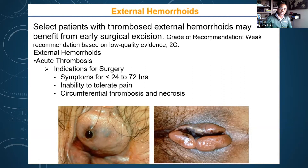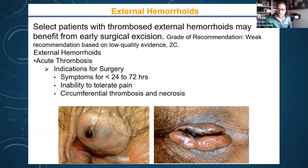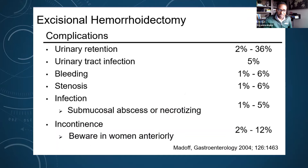We don't want you to undergo complications like necrosis, when the tissue is not receiving adequate blood supply. For more aggressive surgical options, there are some complications involving the genitourinary tract, bleeding, stricture, infection, and rarely constipation or incontinence. For people who require more aggressive surgeries, there are some risks — but in better hands, we're seeing excellent outcomes.